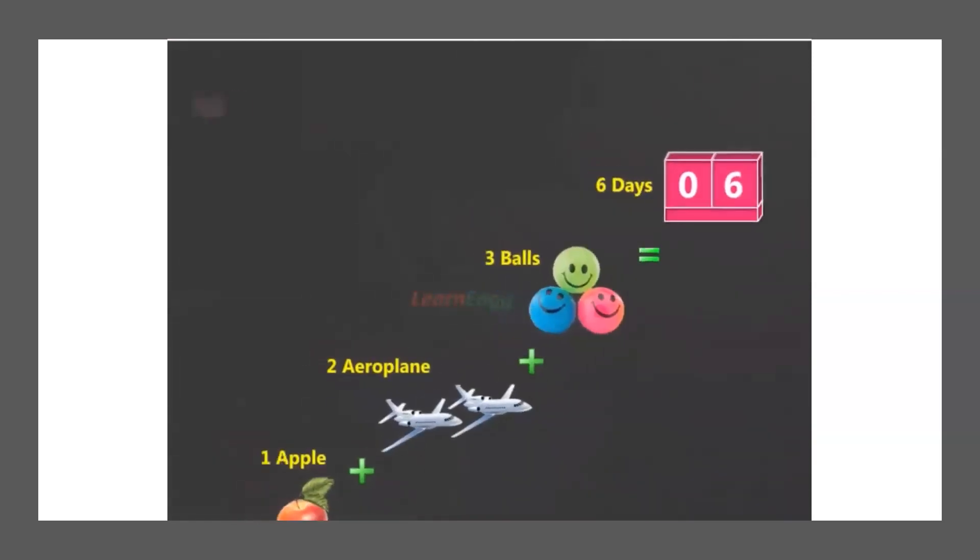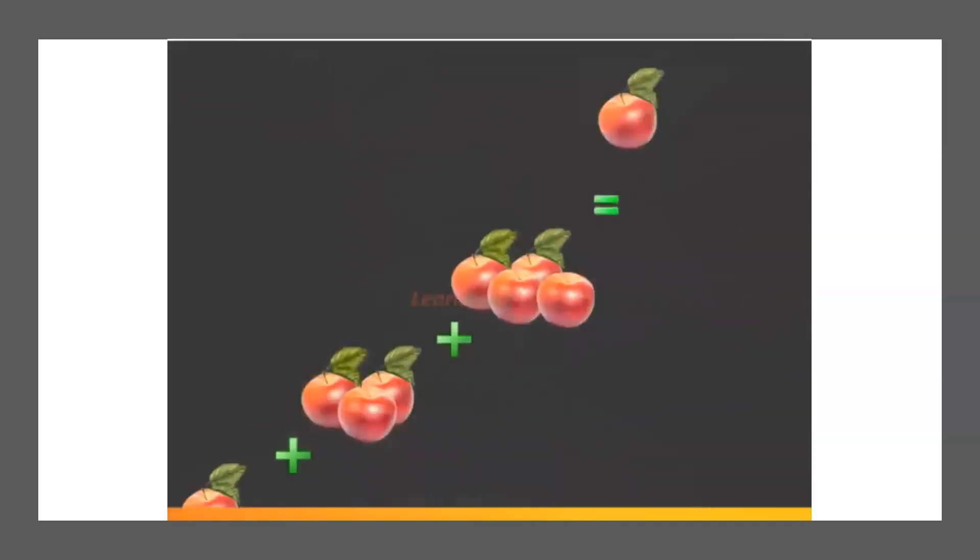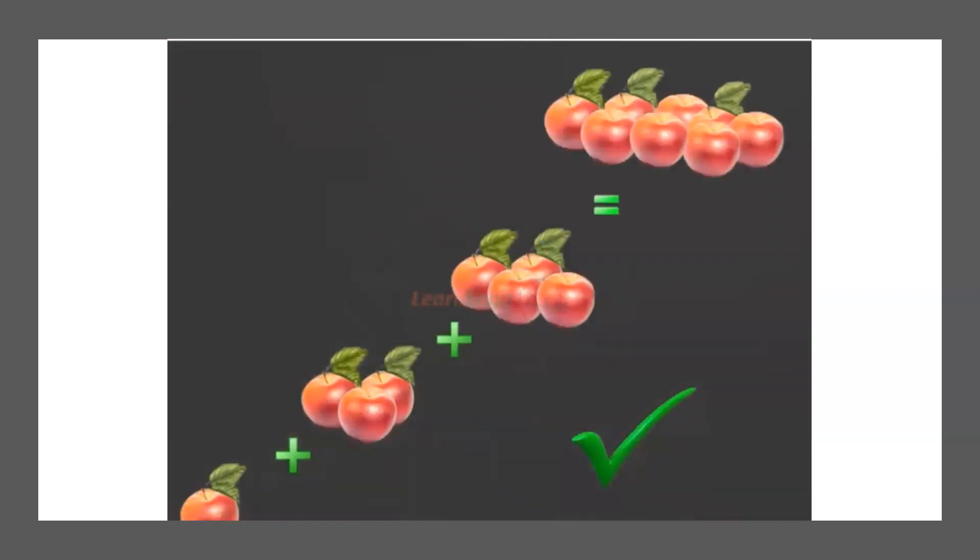As you see here in this video, one apple plus two planes plus three balls is equal to six - is this possible? Not possible. But on the other hand, one apple plus three apples plus four apples equals eight apples. So dimensional homogeneity means the dimensions of each term in an equation on both sides must be equal.